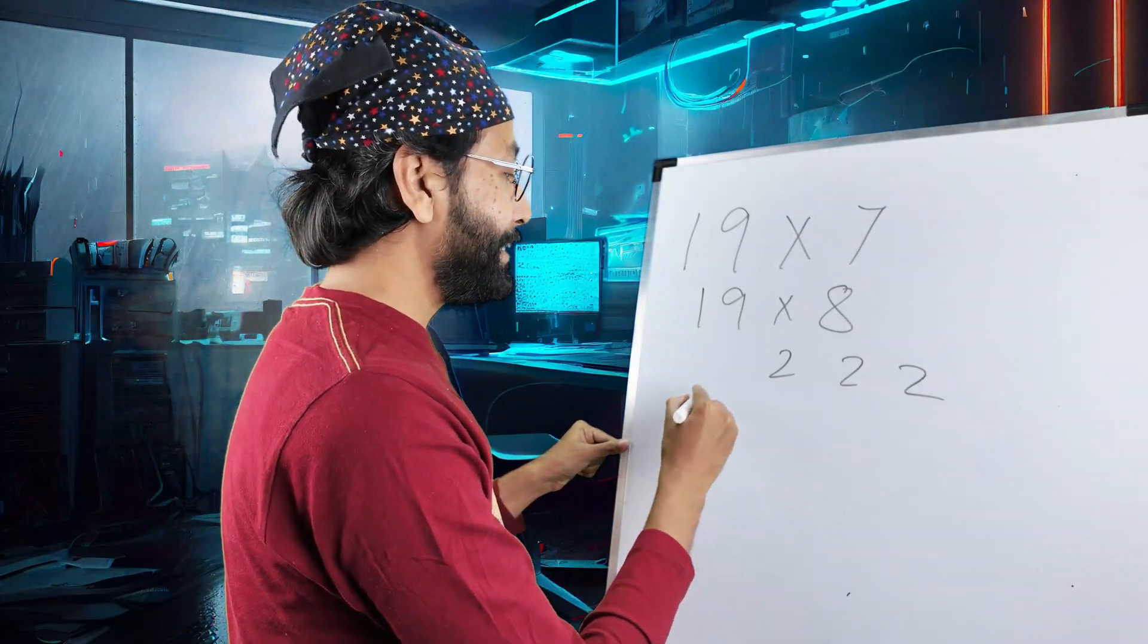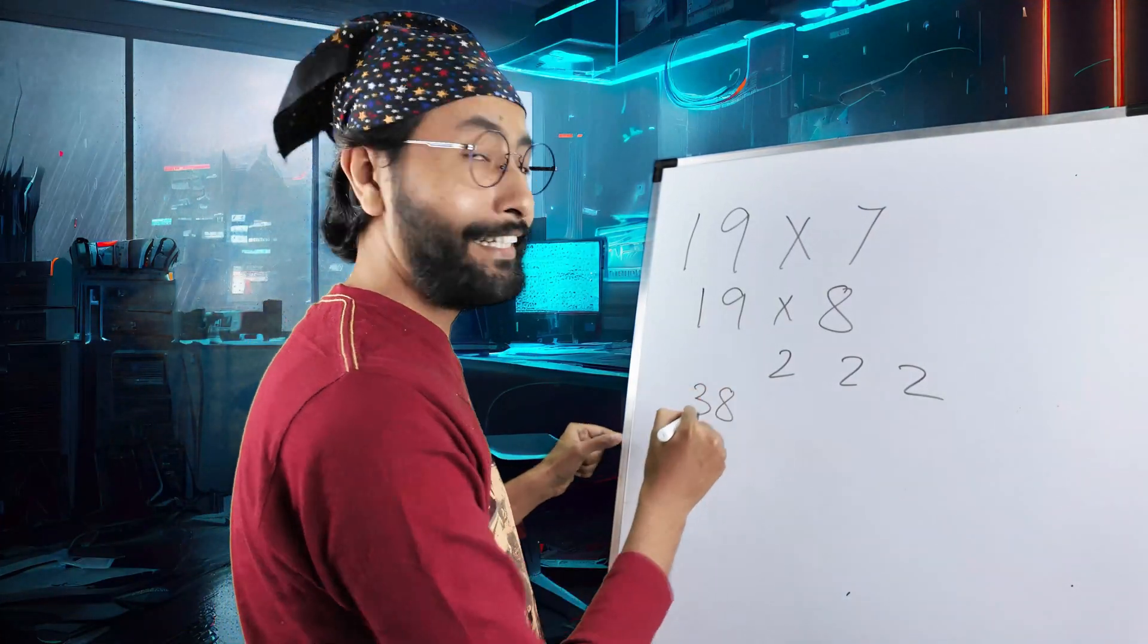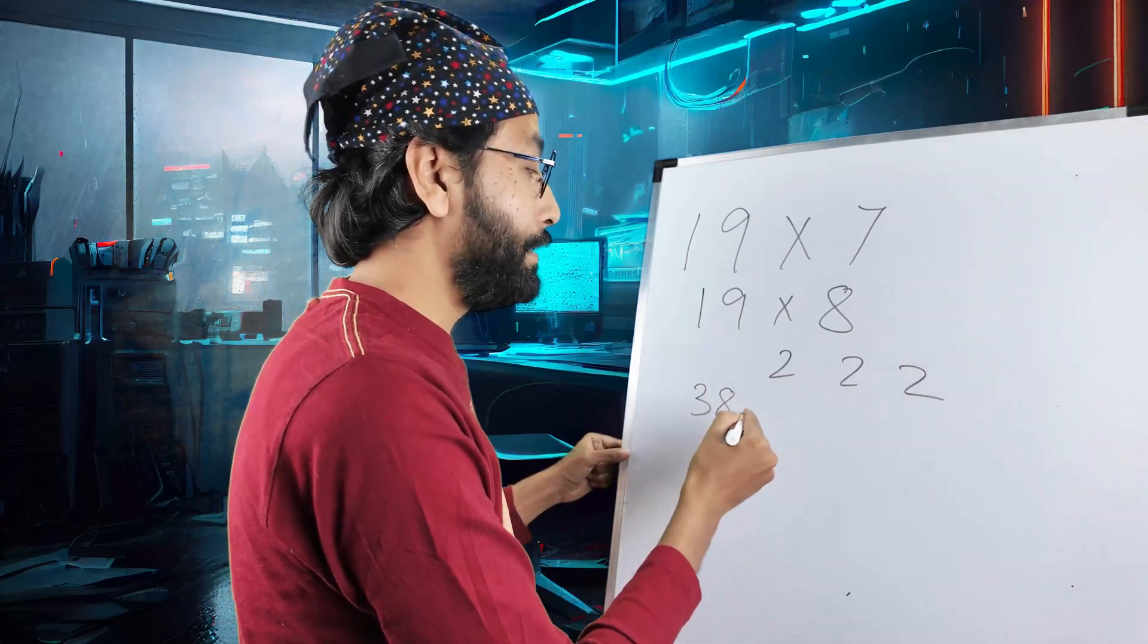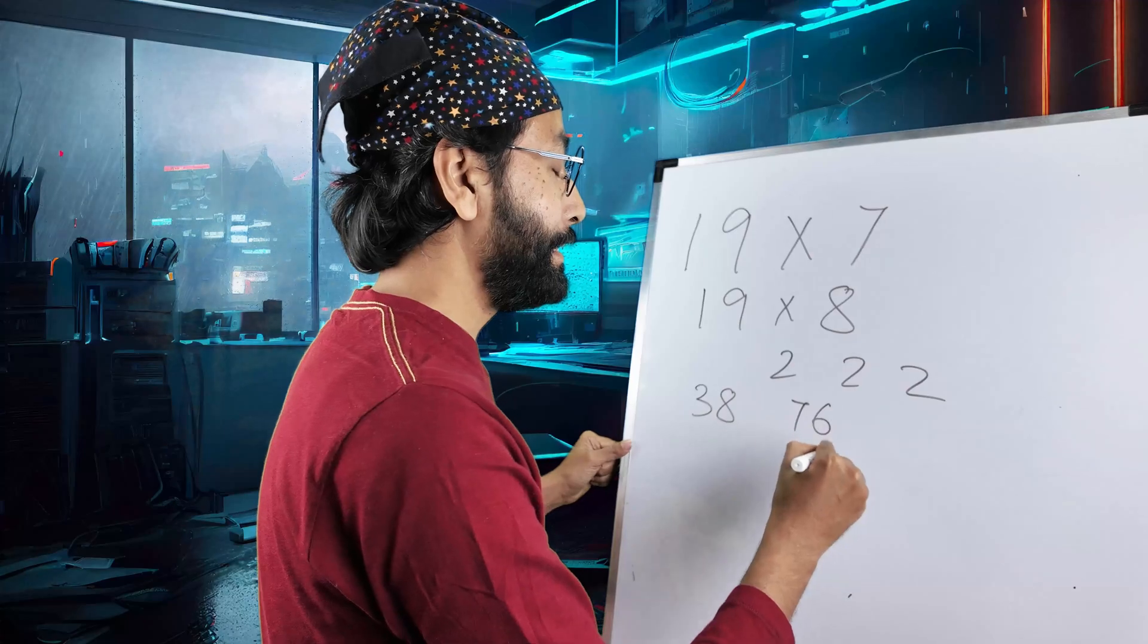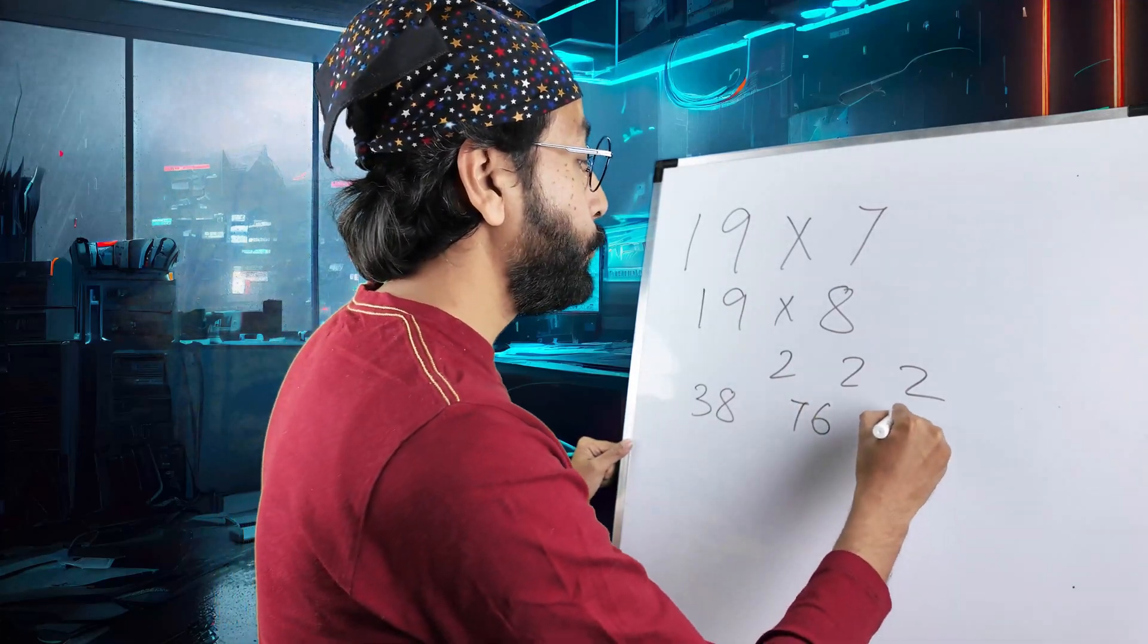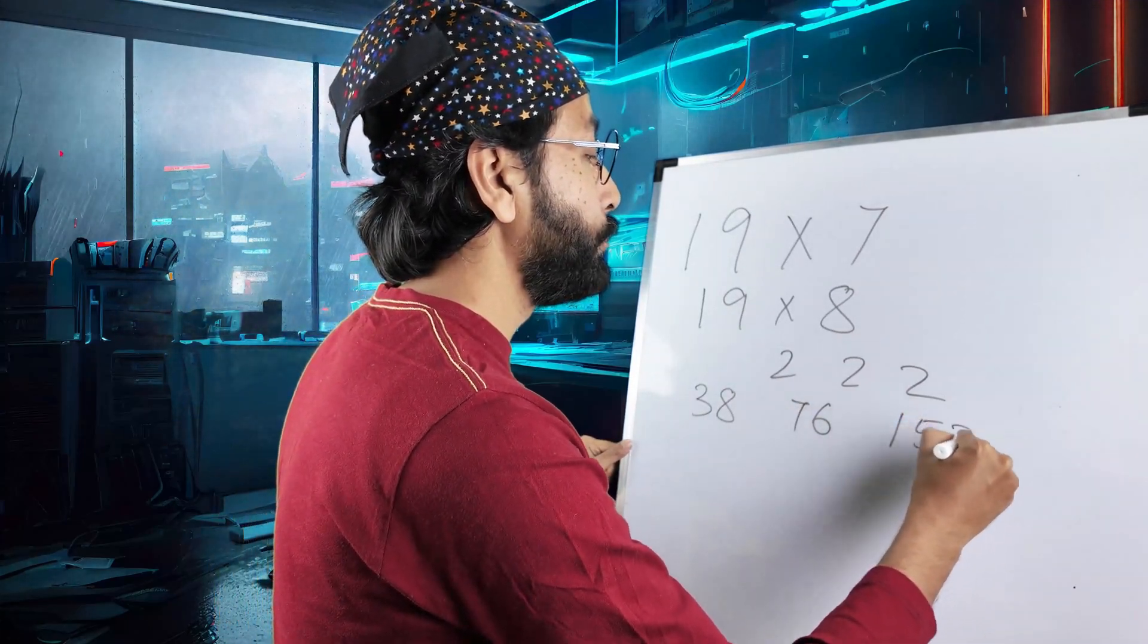So, 19 twos are 38. One time double. Double of 38 is 76. Double of 76 is 152, right?